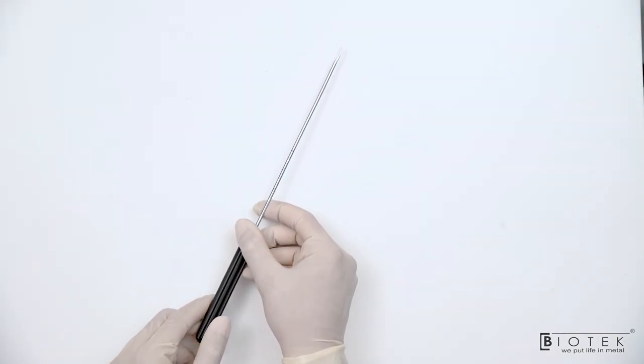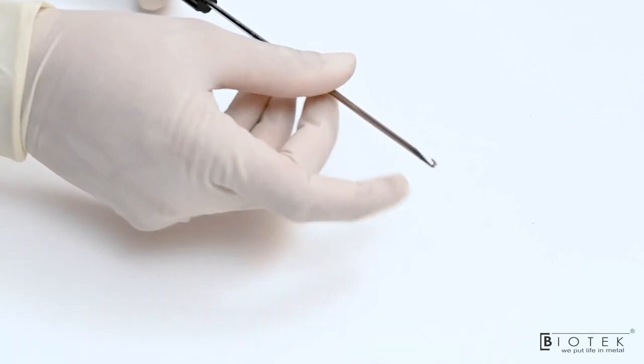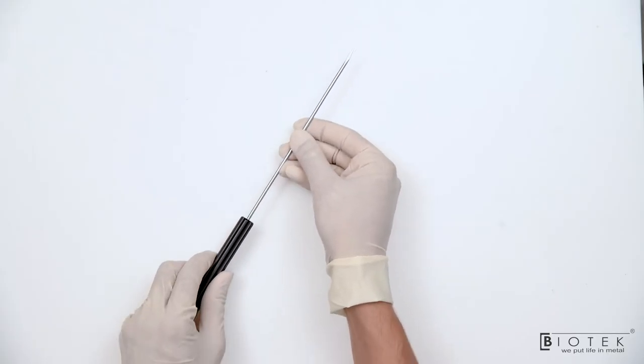This is crochet hook. It has a dual feature. It is used for pulling the suture as well as pushing the sutures.